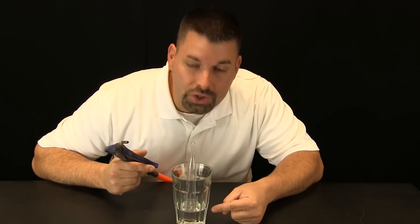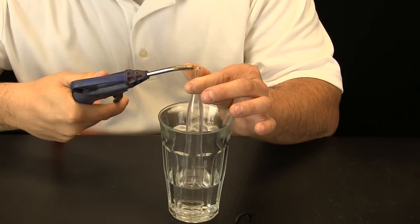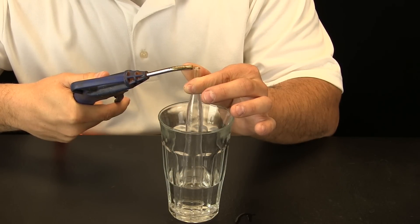We are going to zoom in so you can watch the water level and see if it really does come up the turkey baster because we are lowering the pressure. Okay we have zoomed in so now watch the water level as I blow air quickly across the top. Here we go.